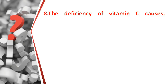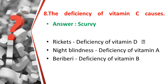The eighth question: the deficiency of vitamin C causes what? The answer is scurvy. Related facts: deficiency of vitamin D causes rickets, deficiency of vitamin A causes night blindness, and deficiency of vitamin B causes various conditions. The deficiency of vitamin C causes scurvy.